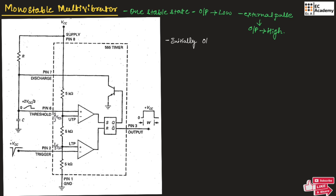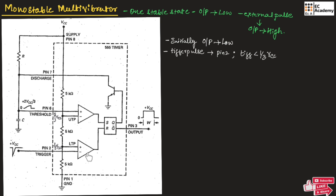Initially the output will remain low. Let us apply a trigger pulse to pin number 2 of the inverting comparator. This trigger pulse will be less than 1/3 VCC, which is at the other input of the inverting comparator. Since the trigger pulse is less than 1/3 VCC, the output of the inverting comparator will be high.